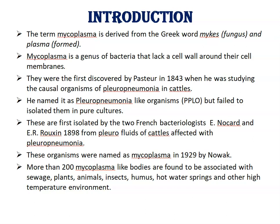These organisms were first isolated by two French bacteriologists, E. Nocard and E. R. Roux, in 1898 from pleural fluid of cattle affected with pleuropneumonia. These organisms were then named as mycoplasma in 1929 by Nowak.